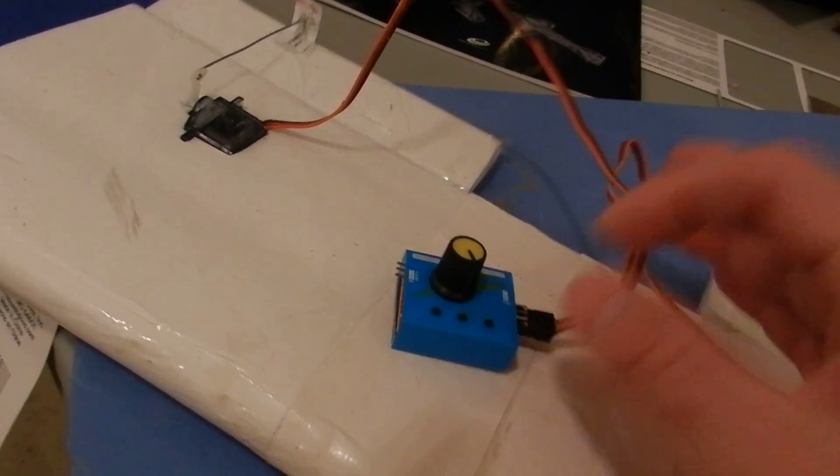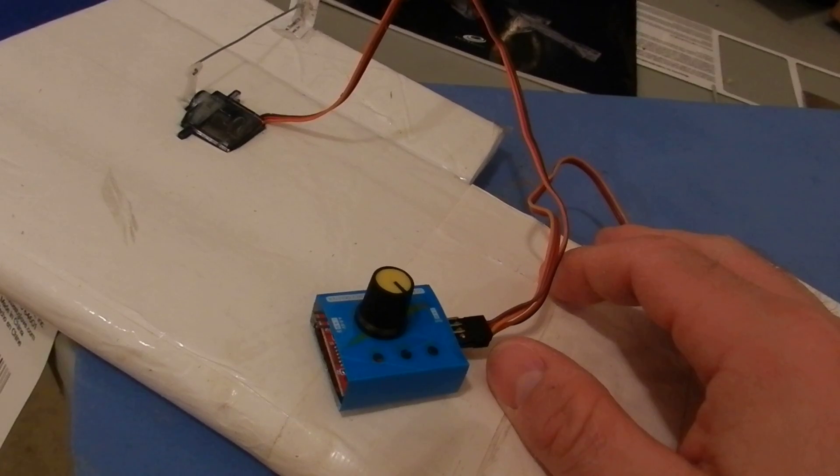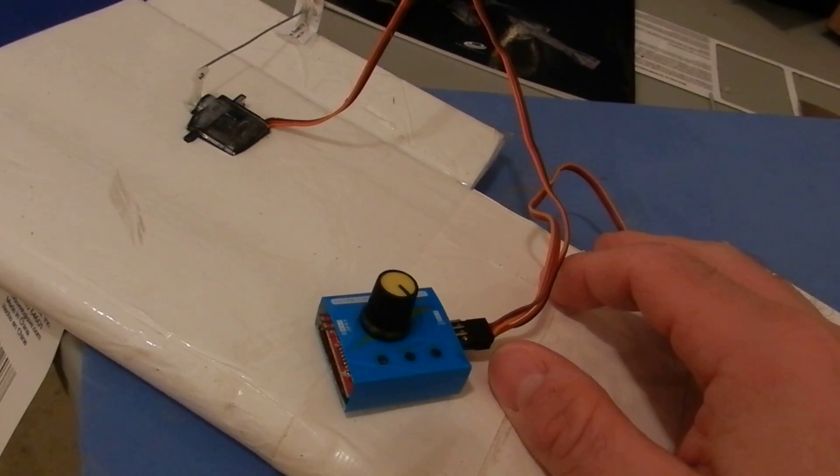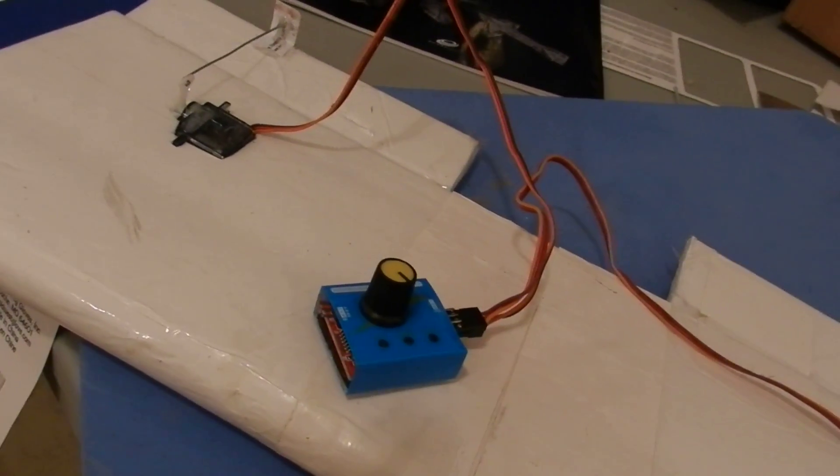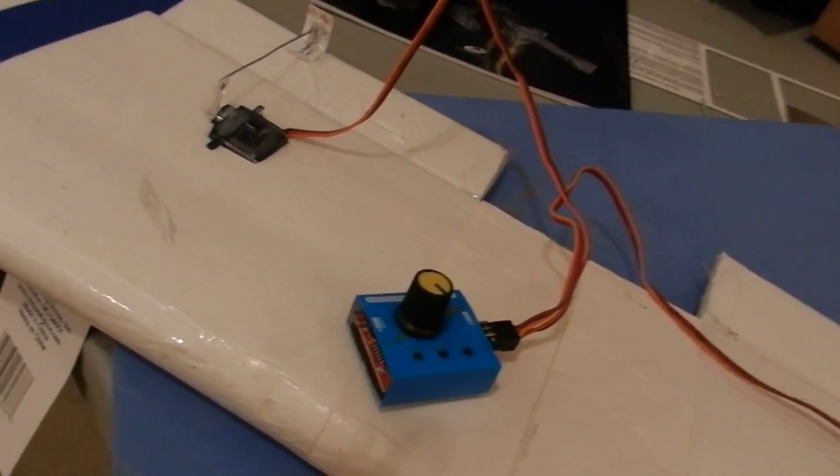Because if you're setting up your transmitter, you don't really know where the throws are, you don't know where the center of those control surfaces are because you don't really know where your servos are centered at.